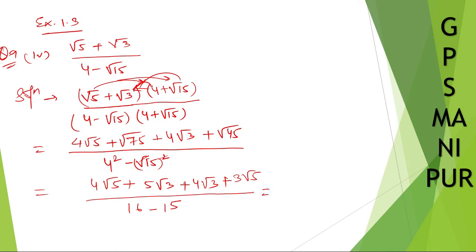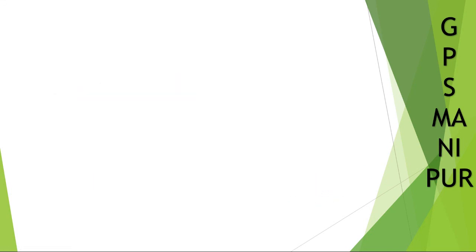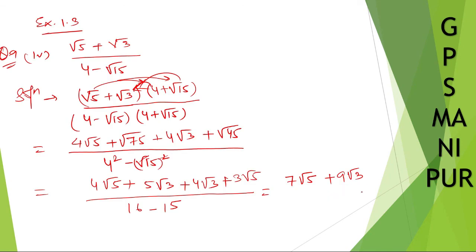Now I can write: 4 root 5 plus 3 root 5 gives 7 root 5. Then 5 root 3 plus 4 root 3 gives 9 root 3. Divided by 16 minus 15, which is 1, so no need to write the denominator. The answer is 7 root 5 plus 9 root 3. Question number 9, roman number 4 is done. Thank you so much, we'll meet in the next video.